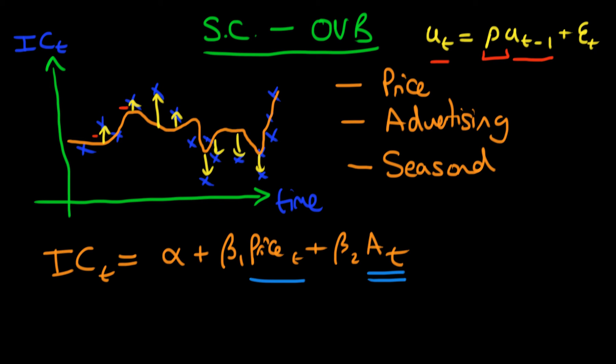So in our original model, the effect of advertising given by beta 2 is likely biased because we've omitted a key variable—temperature—from our model. Once we include this omitted variable temperature, our model will do...